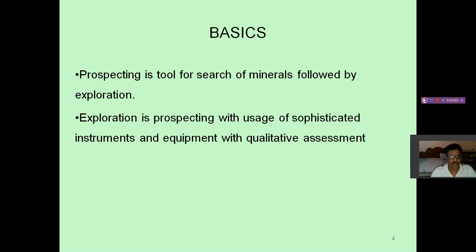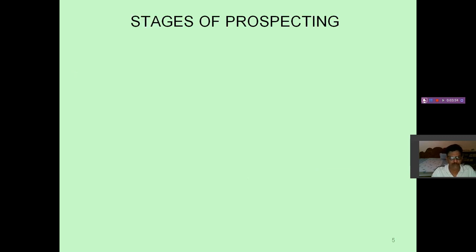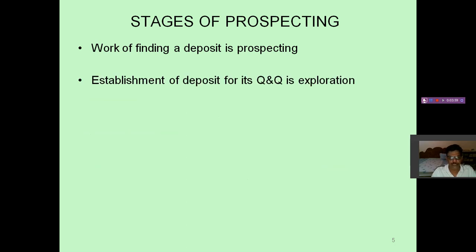Between prospecting and exploration — prospecting is the first step. The work we do initially is known as prospecting. And part of prospecting is exploration. In exploration we will be using some instruments like geophysical instruments, maybe some techniques like pitting and other things. The equipment is meant for qualitative assessment. Exploration method is dependent upon the type of ore body. The work of finding a deposit is prospecting. Establishment of a deposit for its quality and quantity — Q&Q is the abbreviation for quality and quantity — is known as exploration. There are three stages of exploration.